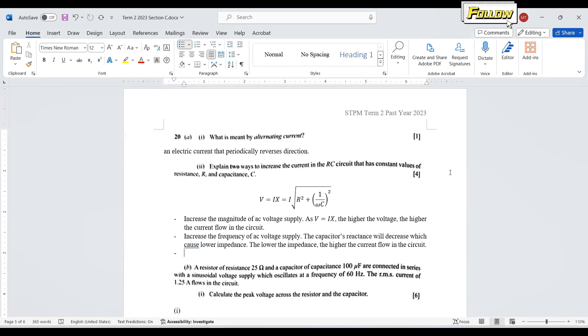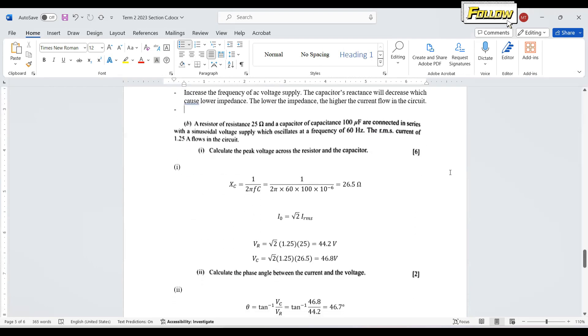the capacitor reactance will decrease, which also decreases the impedance. So the lower the impedance, the higher the current flow in the circuit. We move on to the next question.